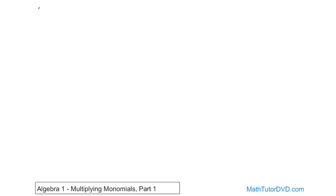For instance, if you have 3 squared, which remember means 3 times 3, and if you're multiplying it by 3 cubed, which remember 3 cubed is 3 times 3 times 3, then how do you simplify that?